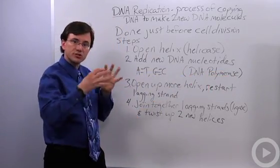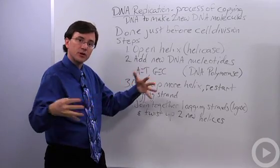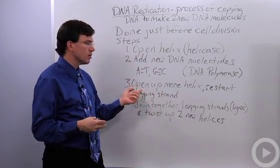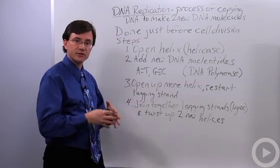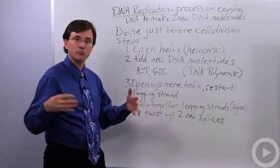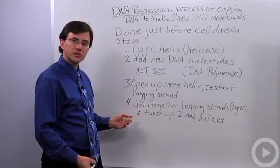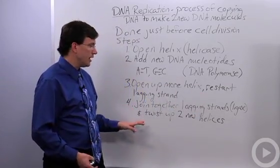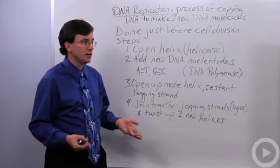Then, once you've copied off the available bases, you have to open up more of the helix and restart some of your strands, which are called the lagging strands, the ones that have to be restarted because they're being built in the wrong direction of the opening helix. And then finally, when you're done, you join together those lagging strands and you twist up your two new double helices.